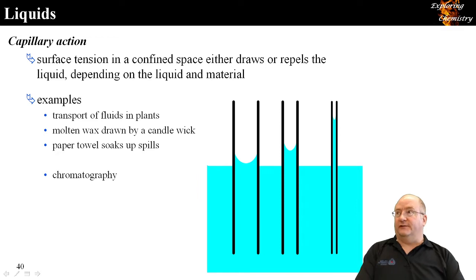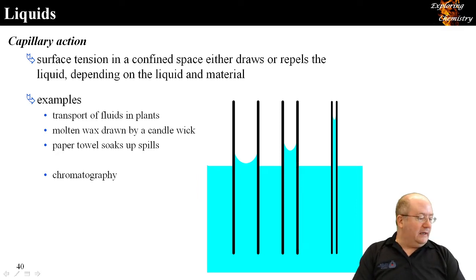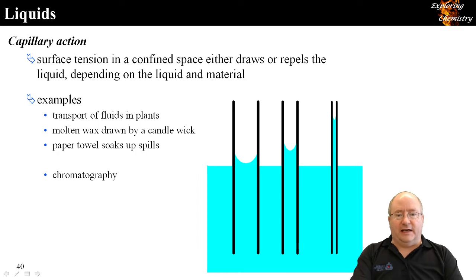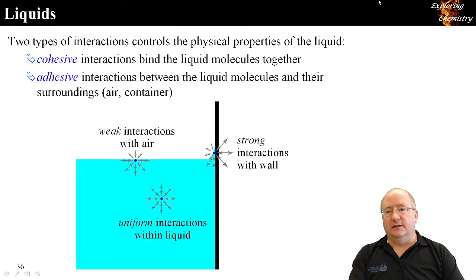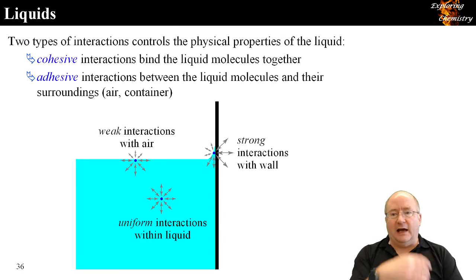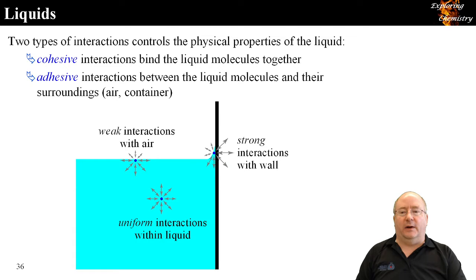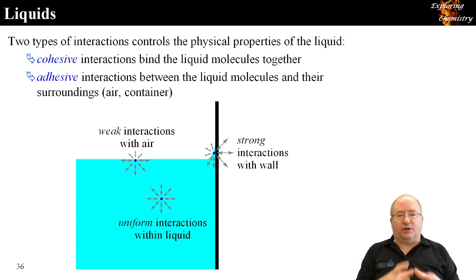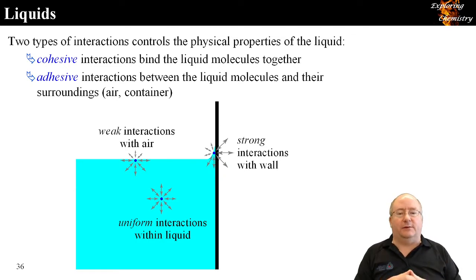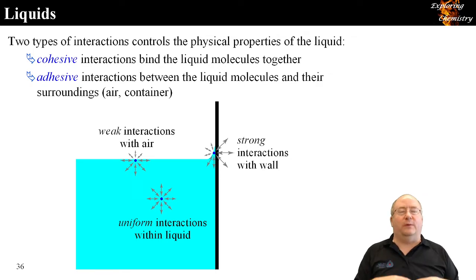Last day we were looking at properties associated with liquids. We had two types of interaction that control the properties of the liquid: the cohesive interactions, which occur within the molecule and bind the molecules of the liquid together, and the adhesive interactions with the environment.